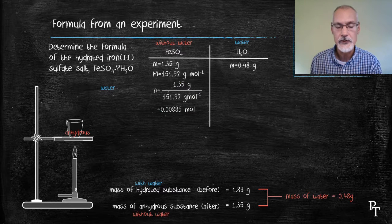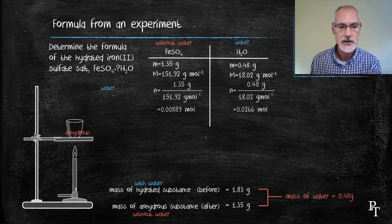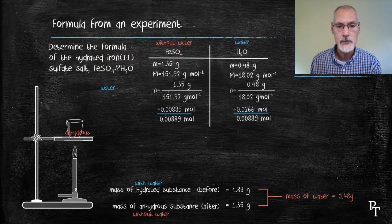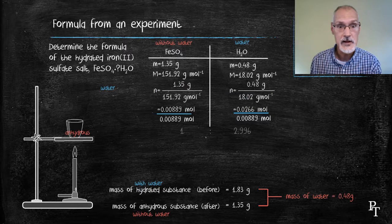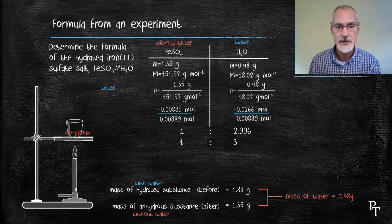Similarly, I determine the number of moles of water, using the molar mass of water, which is 18. Much like in the other method, I take the lower of the two and divide it into them both. That gives me a ratio of 1 to 3. And as a result, my formula is iron sulfate with three water molecules attached to it.